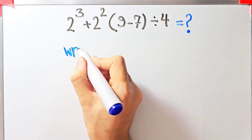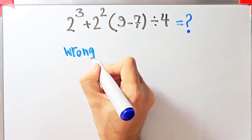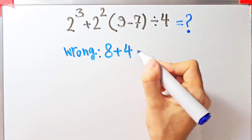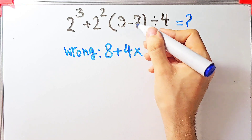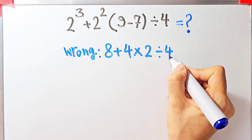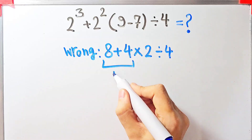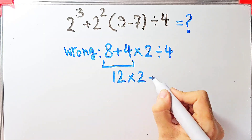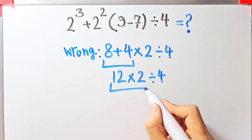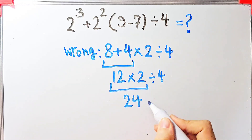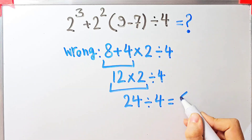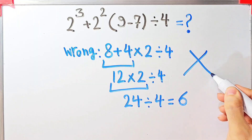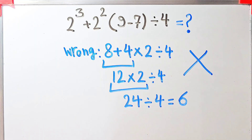Some people solve this question like this: they say 2 to the power of 3 equals 8, then 8 plus 2 to the power of 2 equals 4, then times (9 minus 7) which equals 2, divided by 4. Starting from the left: 8 plus 4 equals 12, 12 times 2 equals 24, and 24 divided by 4 equals 6. They say the final answer equals 6, but this answer is definitely wrong.